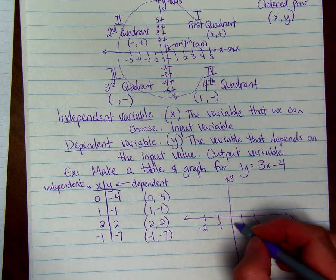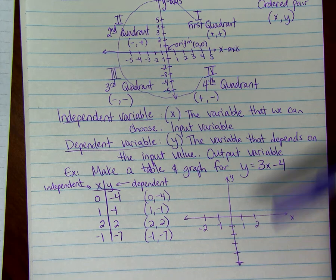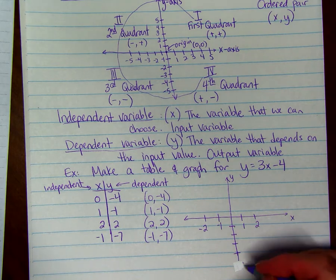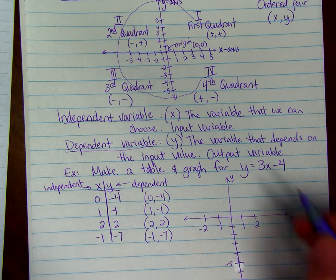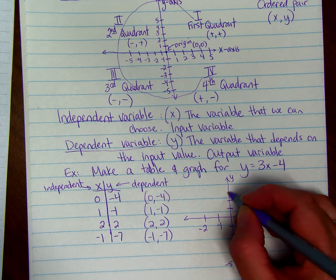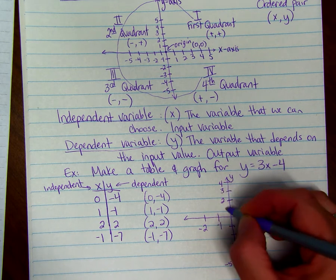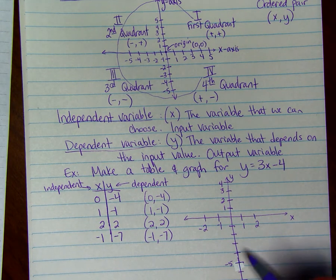The y values actually go down to negative 7, so let's see if we can get down to 7. Not quite, so I'll make it a little bit longer. And we're going to go up to at least 2, just go a little bit more. You can number all the lines or you can just skip over some like I did here in the negatives.